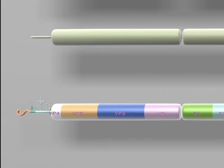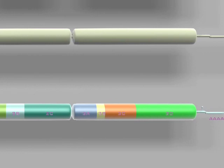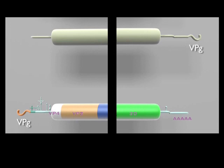This model explains how both positive and negative poliovirus genomes found in infected cells have a VPG covalently attached to their 5' ends.